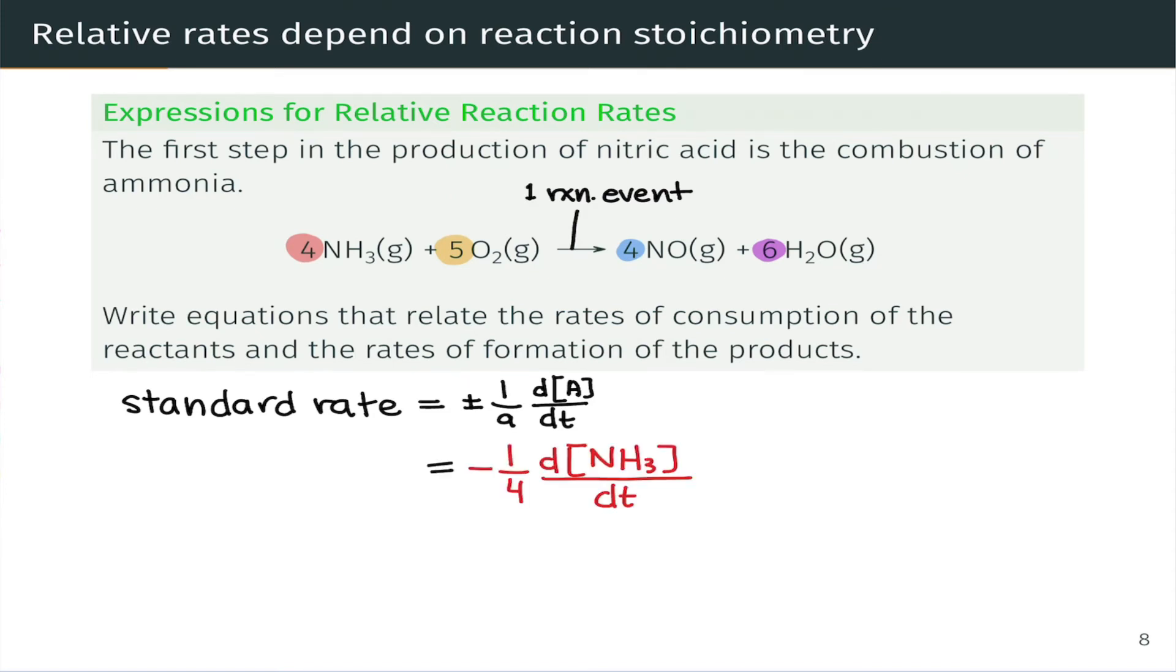So let's apply that expression to each of the species in the balanced equation here. We can start, for example, with NH3. The standard rate is equal to negative one fourth dNH3 dt, where the four comes from the four out front of NH3 in the balanced chemical equation.